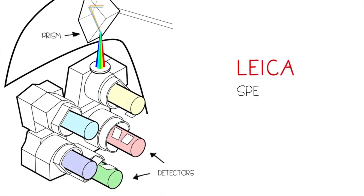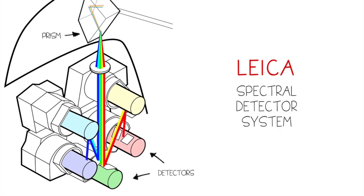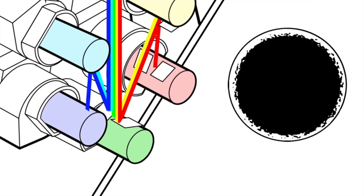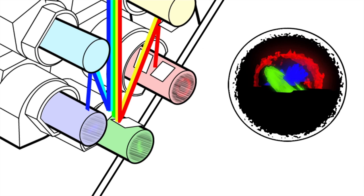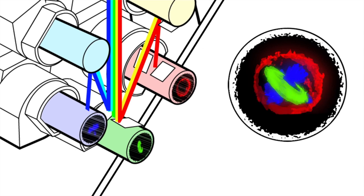A Leica confocal with spectral detection, the acousto-optical beam splitter, and the white light laser is the only confocal that gives you optimized imaging results by producing finely tuned excitation and emission detection specific to every sample.